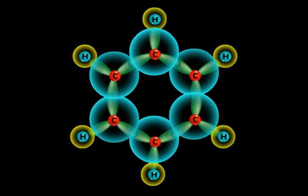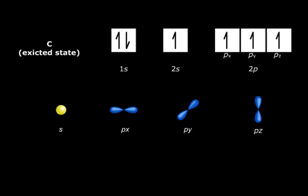What does that mean? It means that each carbon atom has three equivalent sp2 orbitals and one p orbital, each containing one electron.